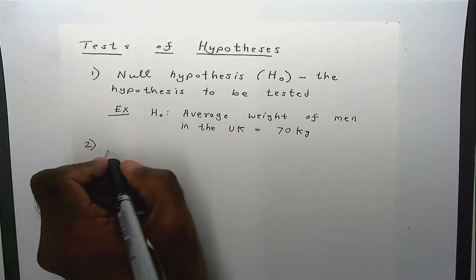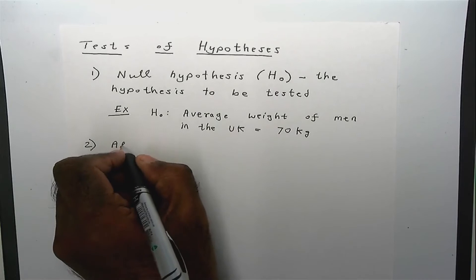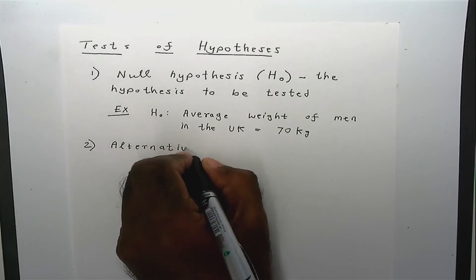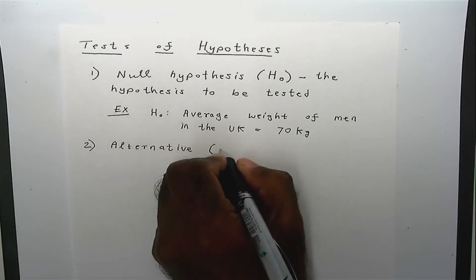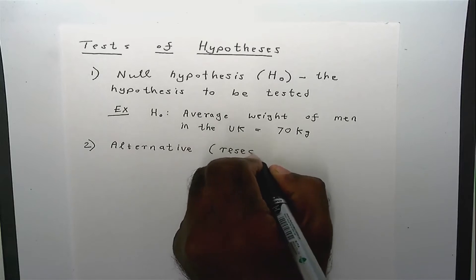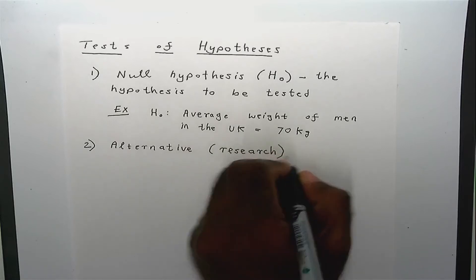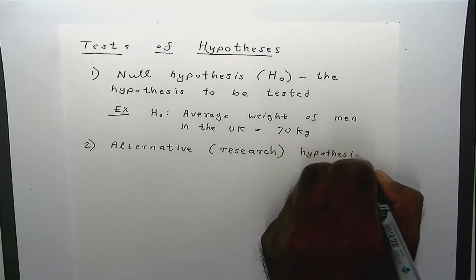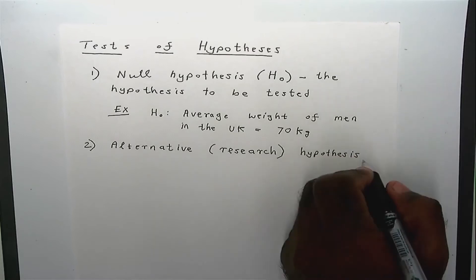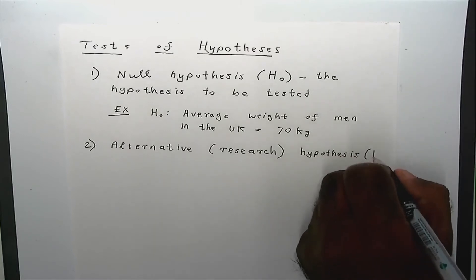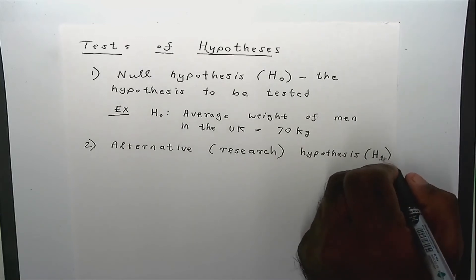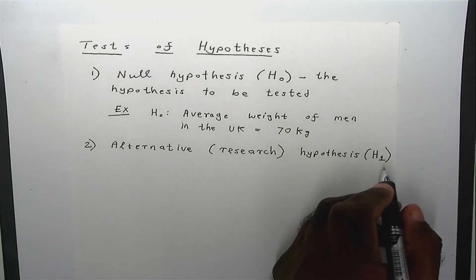Number two, the second element, is the alternative hypothesis, also known as the research hypothesis. It is denoted by capital H subscript one. In some books they use A in place of one, but here I will use capital H subscript one.